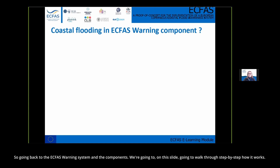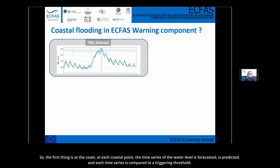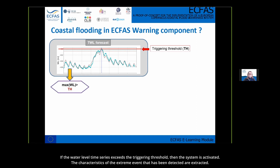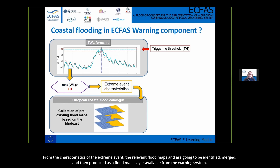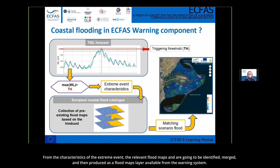Going back to the ECFAS warning system components, let's walk step-by-step through how it works. At each coastal point, the time series of water level is forecasted and compared to a 3D marine threshold. If the water level time series exceeds the threshold, the system is activated. The characteristics of the detected extreme events are extracted, and with these we look inside the European Coastal Flood Catalogue — a collection of pre-existing flood maps based on hindcast. The relevant flood maps are identified, merged, and produced as flood map layers available from the warning system.